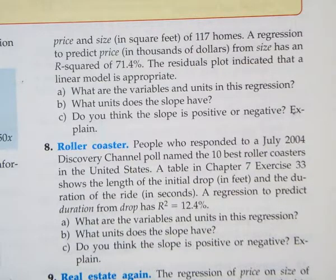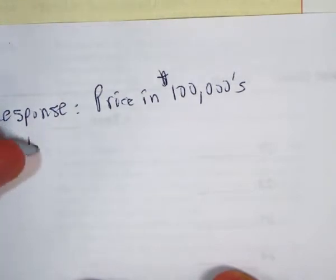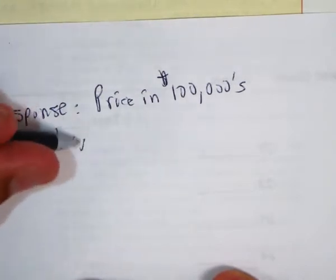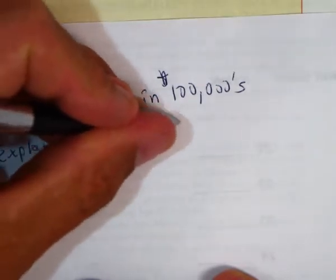Okay, so A, what are the variables? Well, the variables are going to be the response variable is going to be price in hundreds of thousands of dollars, and the explanatory is going to be house size in square feet.